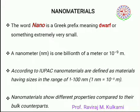What are nanomaterials? What do you mean by nano? Nano in Greek means dwarf, or something extremely small. A nanometer is one billionth of a meter, or 10 to the minus 9 meters. To give some analogy, if you take a hair and cut it into a hundred thousand parts, one part is of the size of a nanometer.